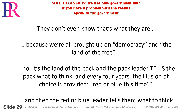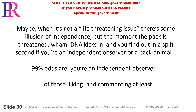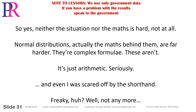Because we're all brought up on democracy and the land of the free — no, it's the land of the pack, and the pack leader tells the pack what to think. And every four years, the illusion of choice is provided: red or blue this time — and then the red or blue leader tells them what to think. Maybe when it's not a life-threatening issue there's some illusion of independence. But the moment the pack is threatened, DNA kicks in and you find out in a split second if you're an independent observer or a pack animal. Neither the situation nor the maths is hard. Normal distributions — actually the maths behind them — are far harder. These aren't. It's just arithmetic.